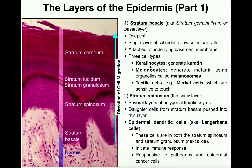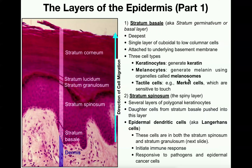Within the stratum basale, we're going to have three types of cells. First, keratinocytes — these are cells that are going to generate keratin, a protein that gives cells rigidity and protective features by making the cells really hard. Pretty much all the cells toward the superficial regions are going to be keratinized. The second cell type is the melanocyte, which generates melanin inside organelles called melanosomes. The melanocytes generate the melanin and eventually deposit it inside the keratinocytes — so the keratinocytes ultimately receive the melanin, but the melanocytes make it.